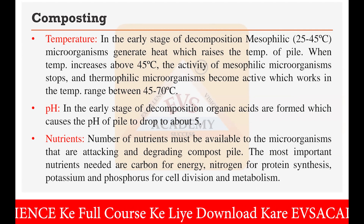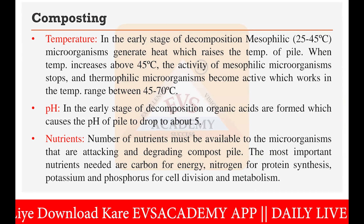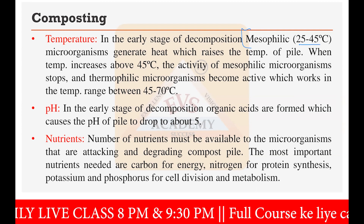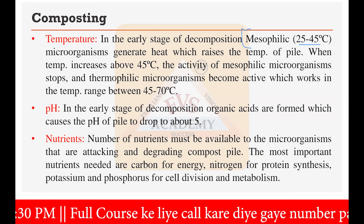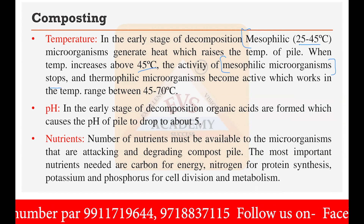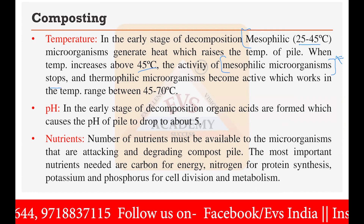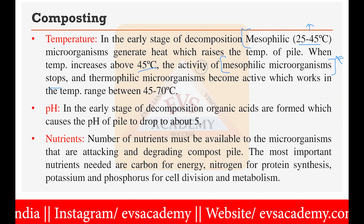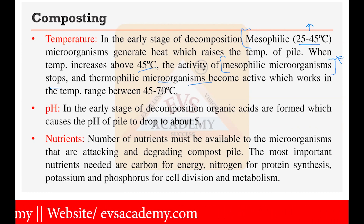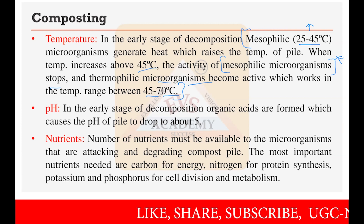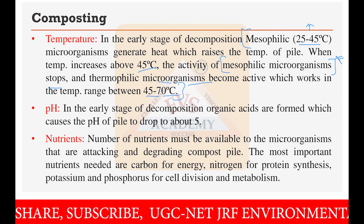The first factor affecting composting is temperature. In the early stage of decomposition, called the mesophilic stage, the temperature is generally 25 to 45 degrees Celsius. Microorganisms generate heat which raises the temperature. When temperature increases above 45 degrees Celsius, the activity of mesophilic microorganisms stops. New thermophilic microorganisms then become active, working in the temperature range of 45 to 70 degrees Celsius, and these release gases like methane and carbon dioxide.